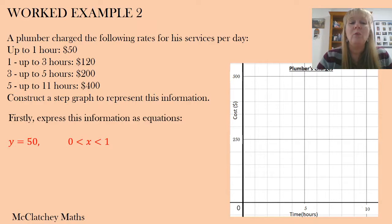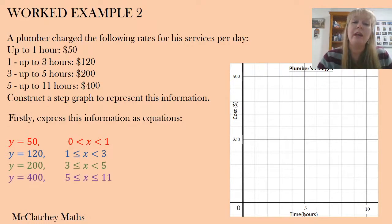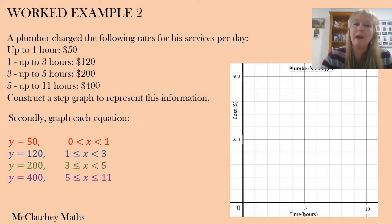So firstly, what this is saying is that the charge will be $50 on the y-axis. $50 is on the y-axis. You can see cost there on the graph. For all values greater than zero and not all the way up to one hour but not including that hour mark. That'll be $50. For the next charge, it'll be $120. That's our next step up. For all the charges from $1 including, sorry, one hour including one hour all the way up to but not including three and so on. So we've created our four inequalities. And now it's time to graph them.